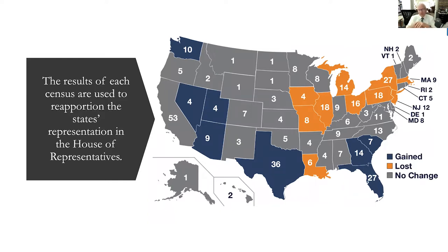Over the years, a fairly high percentage of all people in the country show up in at least one census. The only people who don't are those who died between censuses — for example, children born after 1930 and who died before 1940 will not show up. But with some census records you're able to tell they did exist, even if they're not shown.